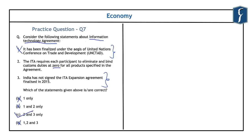The correct answer is C, that is 2 and 3 only. The ITA requires participants to eliminate and bind customs duties at zero for all specified products. The ITA was expanded in 2015, adding more ICT products. However, India did not accept this and imposed customs duties on newly added ICT products in the ITA expansion agreement. As such, India is not a party to the ITA expansion agreement, though it was initially part of the original ITA.